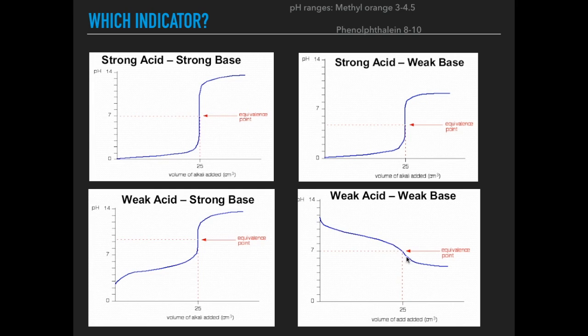And I've included this so you've got all four curves. But weak acid-weak base, it's very, very difficult to get an indicator to work with this because there's no vertical section.